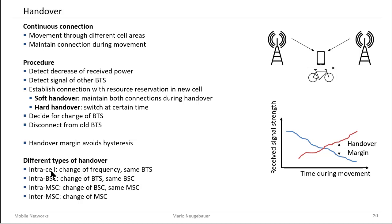You may also perform an intra-cell handover, where you measure that one frequency has problems — for example due to fading or interference — and you perform the handover by staying with the same base transceiver station but changing only the frequency. In summary, handover is a mechanism to deal with the mobility of mobile stations in the network and to ensure that the same service is provided to the mobile station even when it is moving.